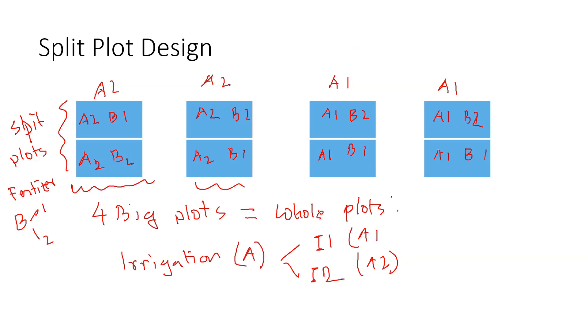You can see that the whole plot was randomized one way when we applied the irrigation method, and then the split plot was randomized separately — so there are two randomizations going on here.